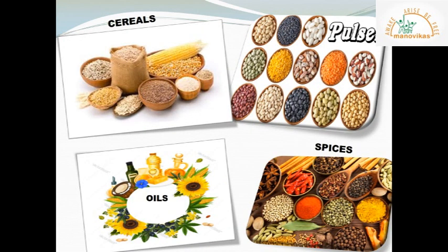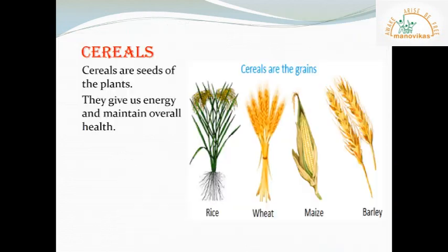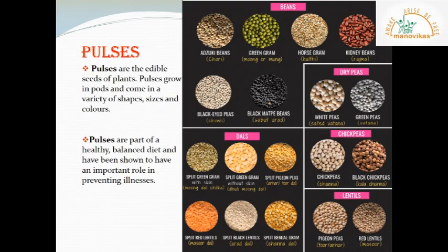Besides fruits and vegetables, plants also provide us with cereals, pulses, oils and spices. Cereals are seeds of plants. Some of the most common varieties are rice, wheat, maize, barley, etc. Cereals give us energy and maintain our overall health. They also help to prevent diseases.